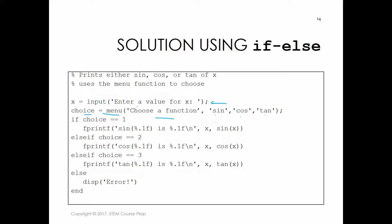Now we start our if statements. If choice is equal to 1, that means they picked sine — because choice equals 1 if they hit the top button, and sine is the top button. So we do an fprintf and print something like 'sine of [x] is [result]', using percent .1f format specifiers, with x as the first value and sine(x) as the second value.